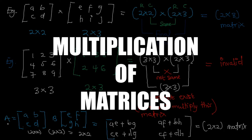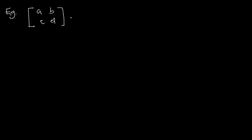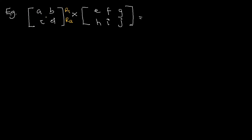Now let's talk about the multiplication of matrices. For us to be able to multiply matrices, we need to make sure the matrices are compatible. For example, if we have a 2×2 matrix and we multiply it by a 2×3 matrix, we check the column of the first matrix and the row of the second matrix — both are 2, so they are the same. This means we can multiply them, and the result will be a 2×3 matrix.